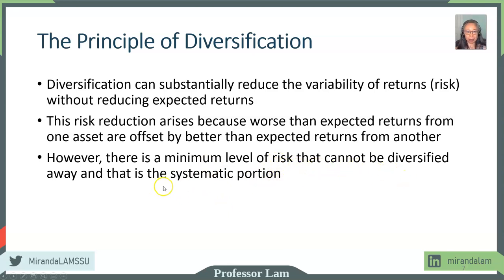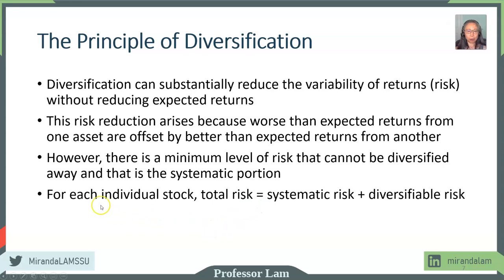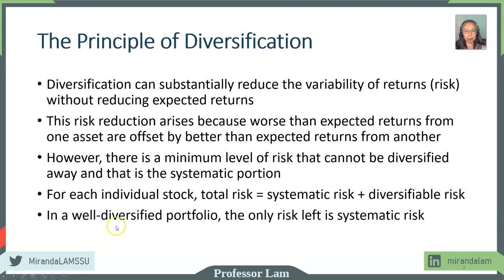The risk that cannot be diversified away is called systematic risk. For each stock, you can think of its total risk as having two components: a systematic component and a diversifiable component. If you are an individual investor and you purchase a large number of stocks in a well-diversified portfolio, you can eliminate the diversifiable risk. However, you will always have systematic risk remaining.